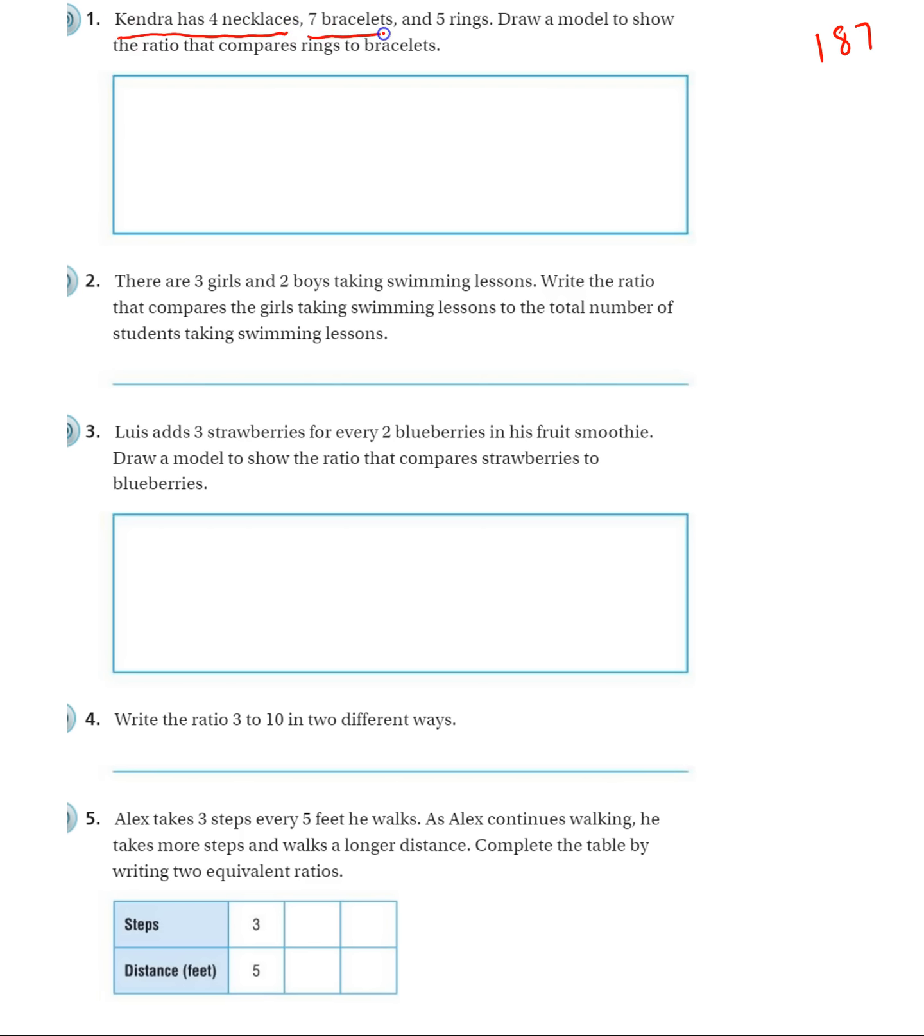Kendra has four necklaces, seven bracelets, and five rings. Draw a model to show the ratio that compares rings to bracelets. Notice it doesn't mention the necklaces at all. So this is just information that we don't need right now. Don't get distracted by that.